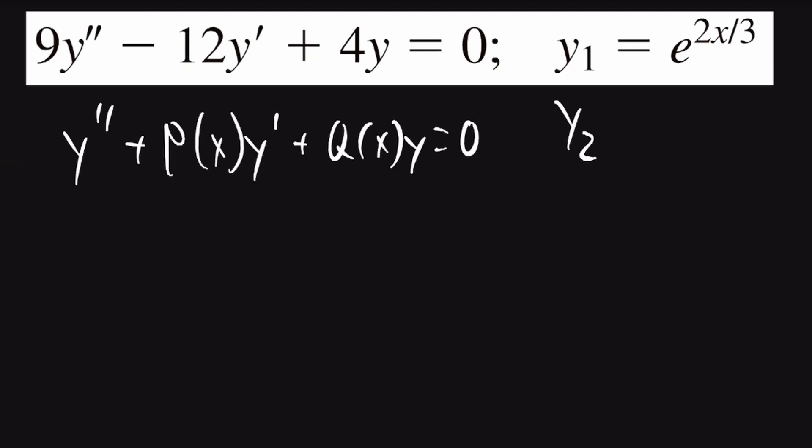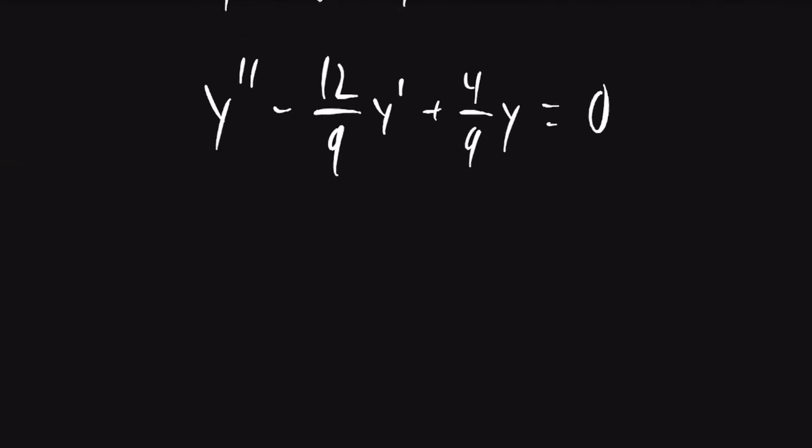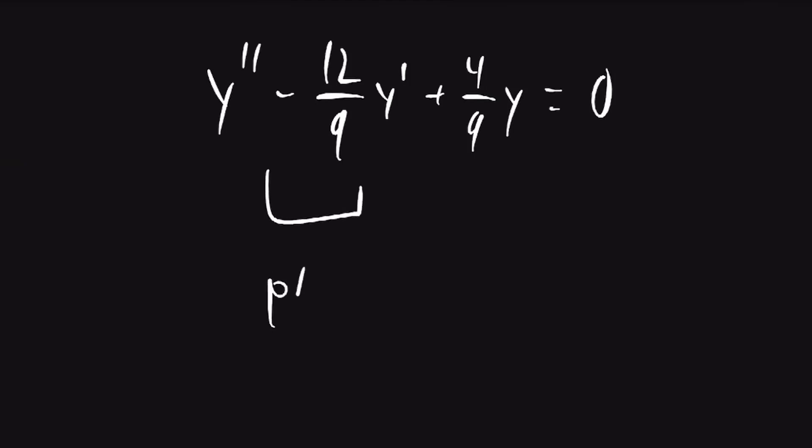To do this, I'll divide all the terms by 9. We'll get y double prime minus 12 over 9 y prime plus 4 over 9 y is equal to 0. So our p of x is going to be negative 12 over 9, which is negative 4 over 3.